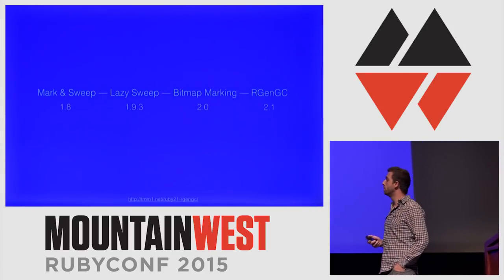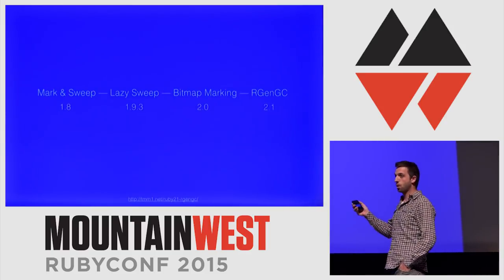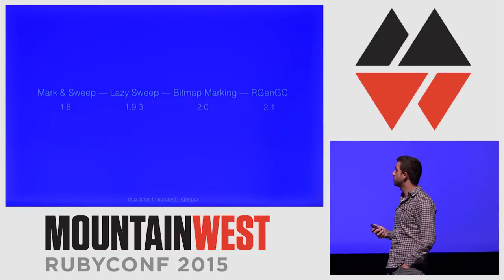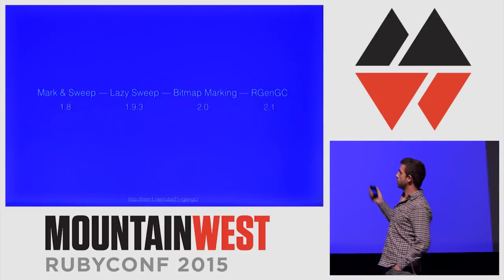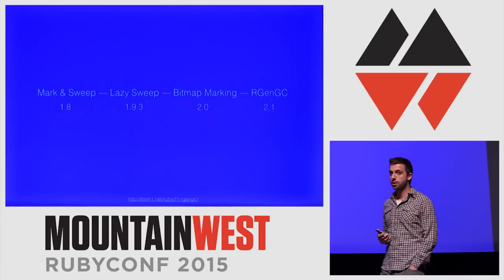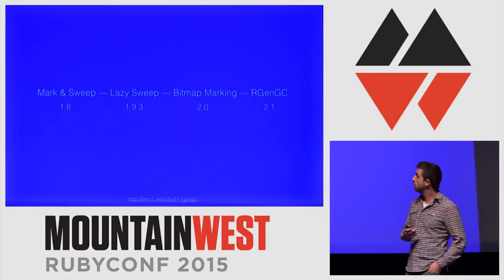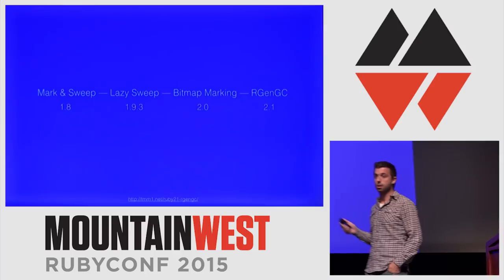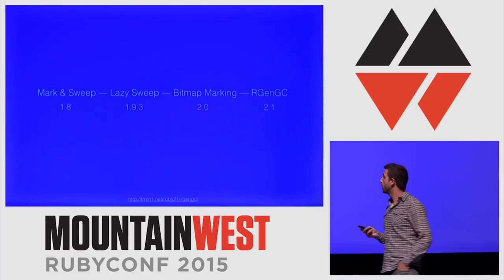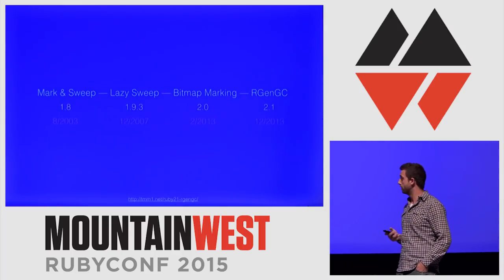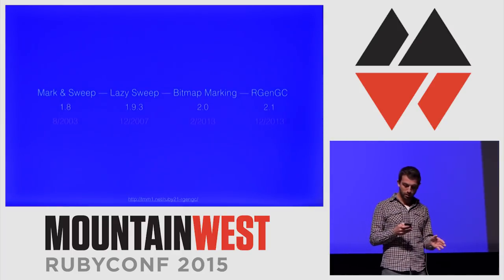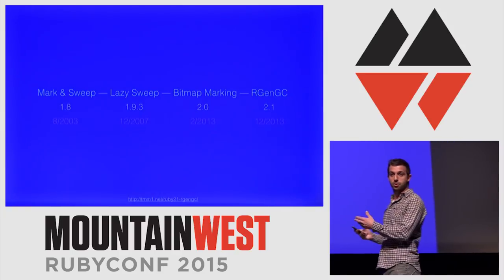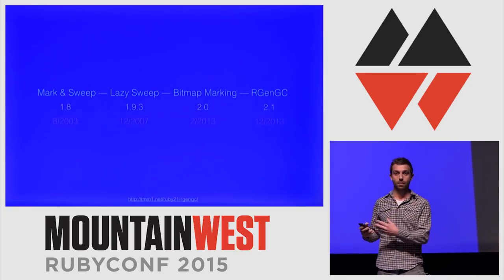What I'm not going to talk about is the full story of Ruby's garbage collector, but let me give a brief overview. The garbage collector has evolved over time from mark and sweep, to lazy sweep, to bitmap marking, and finally generational garbage collection. And if we look at the dates on these, we actually end up with the story that means we should have a new garbage collector already by now.